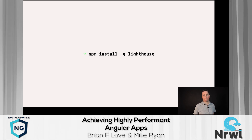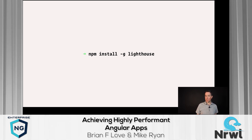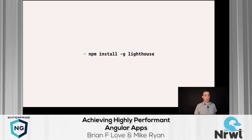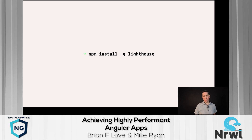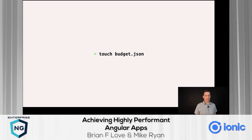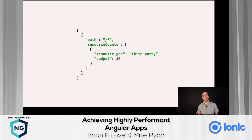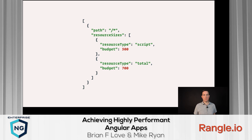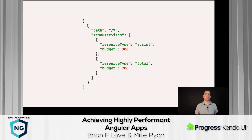You can install Lighthouse with npm. Once installed, you can run analysis and do lab measurements locally on your development machine. We should also monitor performance using performance budgets. To get started, you create a budget.json file. In that file you can configure budgets — for example, a budget of 10 for third-party resources, kilobyte limits for JavaScript and total resources in your web app.